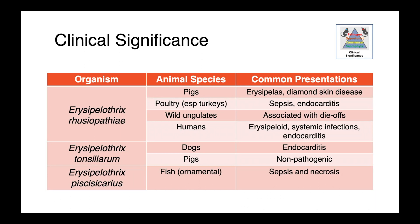Erysipelothrix tonsillarum causes endocarditis in dogs, but in pigs is thought to be non-pathogenic. And then finally, among ornamental fish, Erysipelothrix piscisicarius has been recently identified as a cause of sepsis and necrosis.